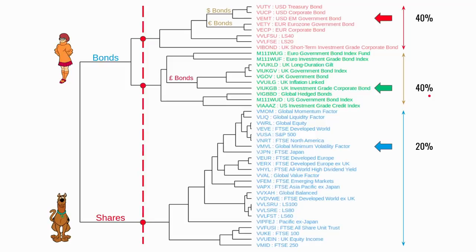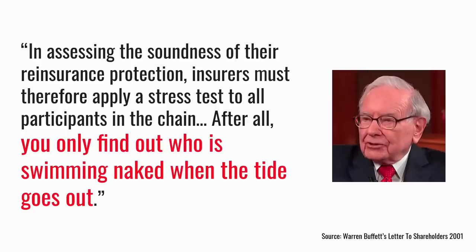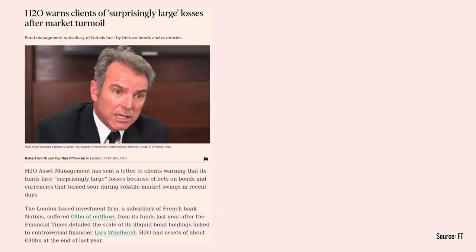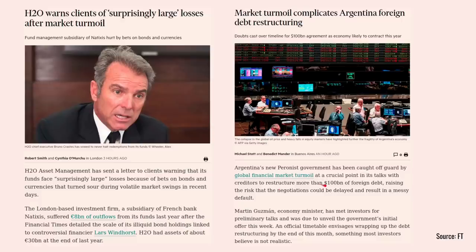Since then we've had that very large sell-off in equities, but there have also been other developments that make me more cautious about my two fixed income or bond allocations. My primary concerns are about the secondary or ripple effects of the big sell-offs we've already seen. Warren Buffett said you only find out who's swimming naked when the tide goes out, and this kind of market dislocation is a nice example of that. For instance, H2O Asset Management sent a letter to clients warning its funds face surprisingly large losses. Another ripple affects sovereign debt — Argentina is trying to restructure $100 billion of its foreign debt, and those negotiations have become much more difficult given recent volatility.